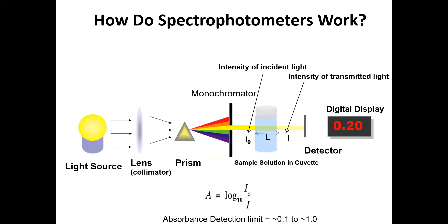How does the spectrophotometer work? You have the machine, and this is all invisible within it. There is a light source — a white light. The light shines on a lens, also called the collimator, which condenses the light towards the prism. The prism converts white light into different colors. Then the monochromator allows one specific color to pass through a slit with a specific diameter for that color.